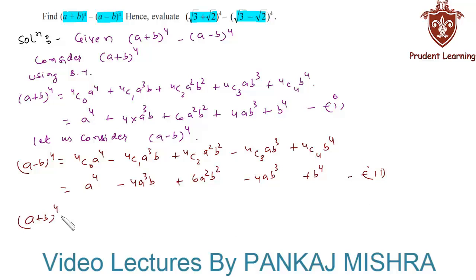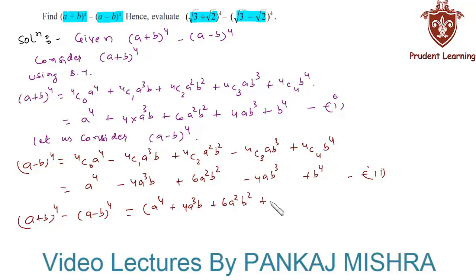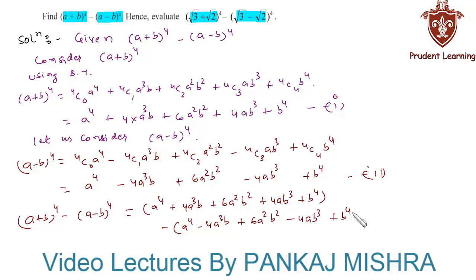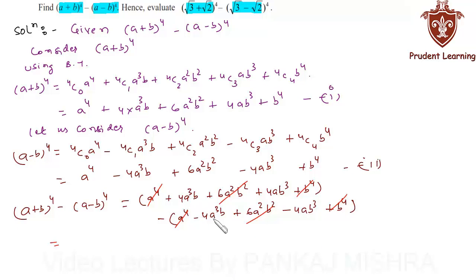In the next step, we find (a + b)⁴ minus (a - b)⁴. This equals (a⁴ + 4a³b + 6a²b² + 4ab³ + b⁴) minus (a⁴ - 4a³b + 6a²b² - 4ab³ + b⁴). We can cancel a⁴, b⁴, and 6a²b². This gives us 4a³b + 4a³b = 8a³b, and 4ab³ + 4ab³ = 8ab³, or we can write it as 8ab(a² + b²).